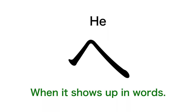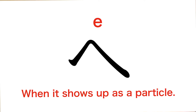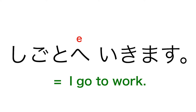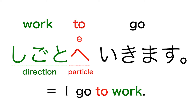Next, へ — this sound is 'he' when it shows up in words, but if you see the letter as a particle, the sound will be 'e.' This particle indicates the direction where to go or where to come. For example, 'shigoto e ikimasu' means 'I go to work.' The particle comes after the direction word 'shigoto,' which means 'work.'